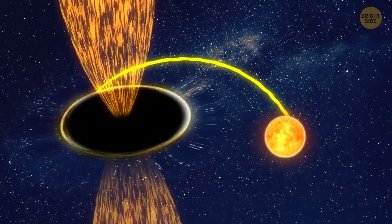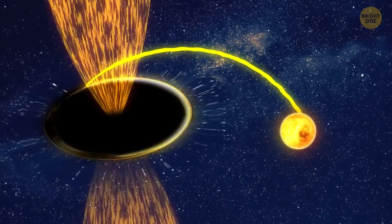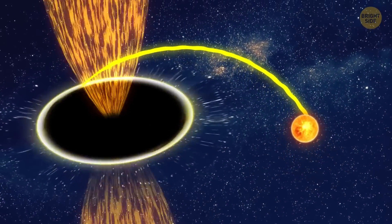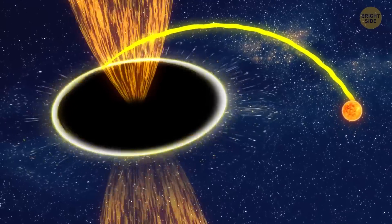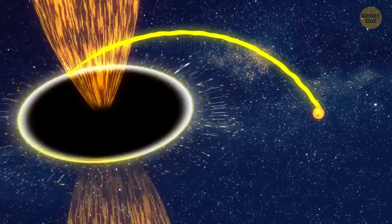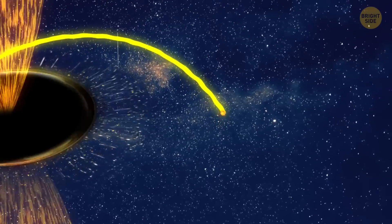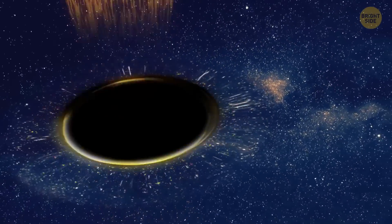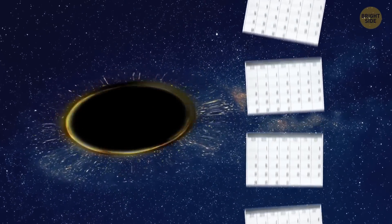When the process of spaghettification is completed, about half of the star's weight has been thrown into outer space as dust and glowing particles. The other half was entirely absorbed by the black hole. The scientists observed this process for almost 6 months.